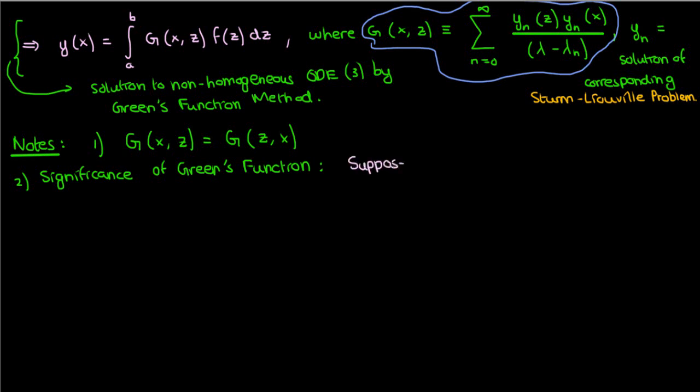Let's say that our f of z, the function that makes our ODE non-homogeneous, the quote-unquote input, suppose that our function f of z is a delta function centered at x.